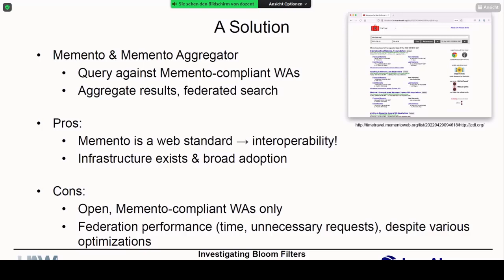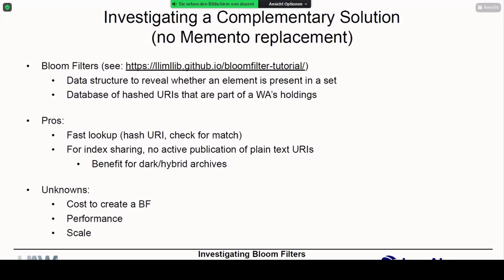Infrastructure exists and we've done our share in that context, but of course it's not all great. There are limitations, such as closed or dark web archives that don't necessarily play a role in this game. And there's always, as usual with federated services, a performance issue, even though we've done a lot of work on optimizing our services here. So we were curious to investigate bloom filters to address this problem to an extent — it's not meant as a Memento replacement, far from it. It's a complementary solution, potentially.